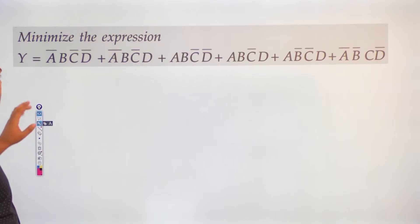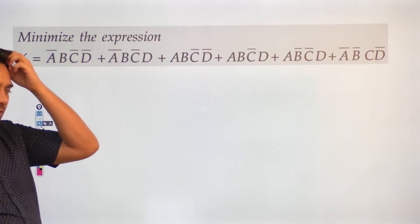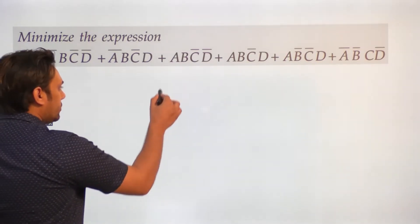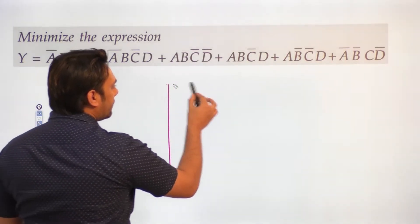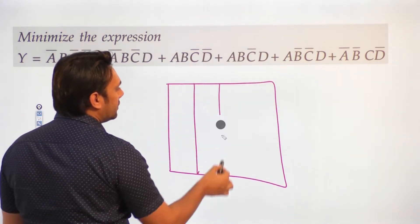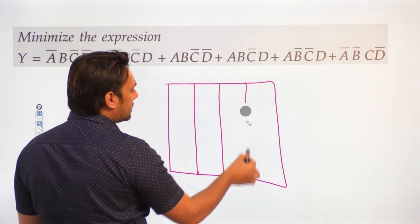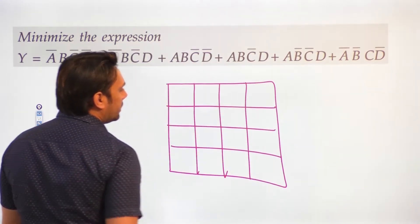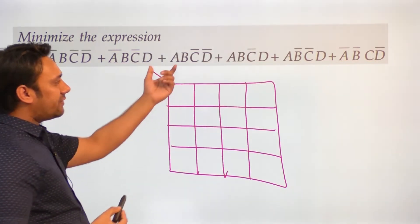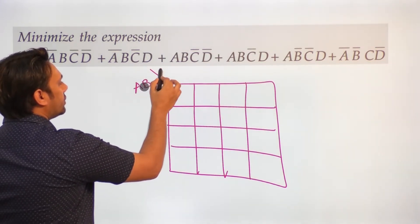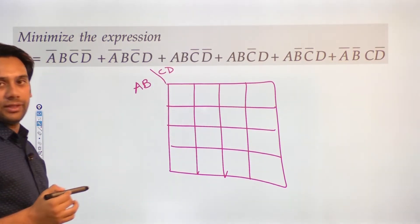So in this example, we are having four variables: A, B, C, and D, and we want to minimize this expression. For four variables, we are going to have a KMap which has 16 entries — there are 16 combinations of four variables. Now, because we have variables A, B, C, D, I am going to take A, B here and I am going to take C, D here.